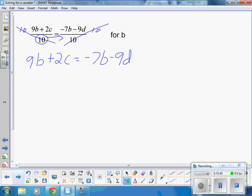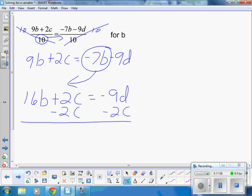We're solving for B. I want all my B's on the left side. I have to move this B to the left side. 9B, I have to add 7B to both sides, so I get 16B plus 2C is equal to negative 9D. I have to get rid of my 2C, so I'm going to subtract 2C, subtract 2C.